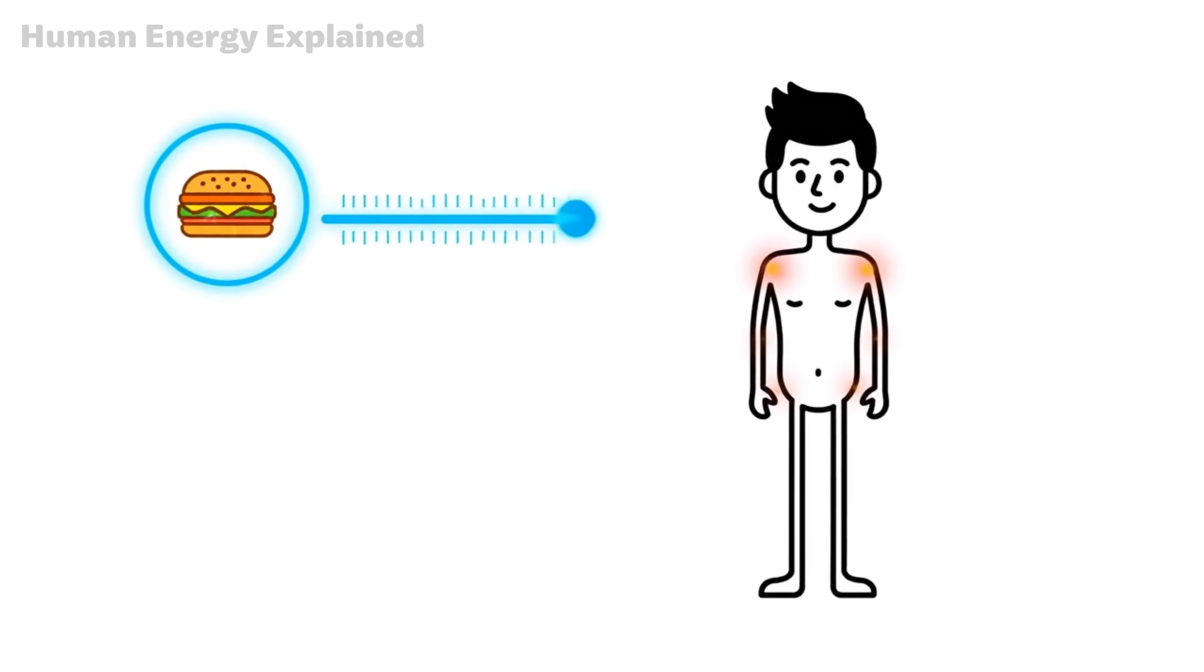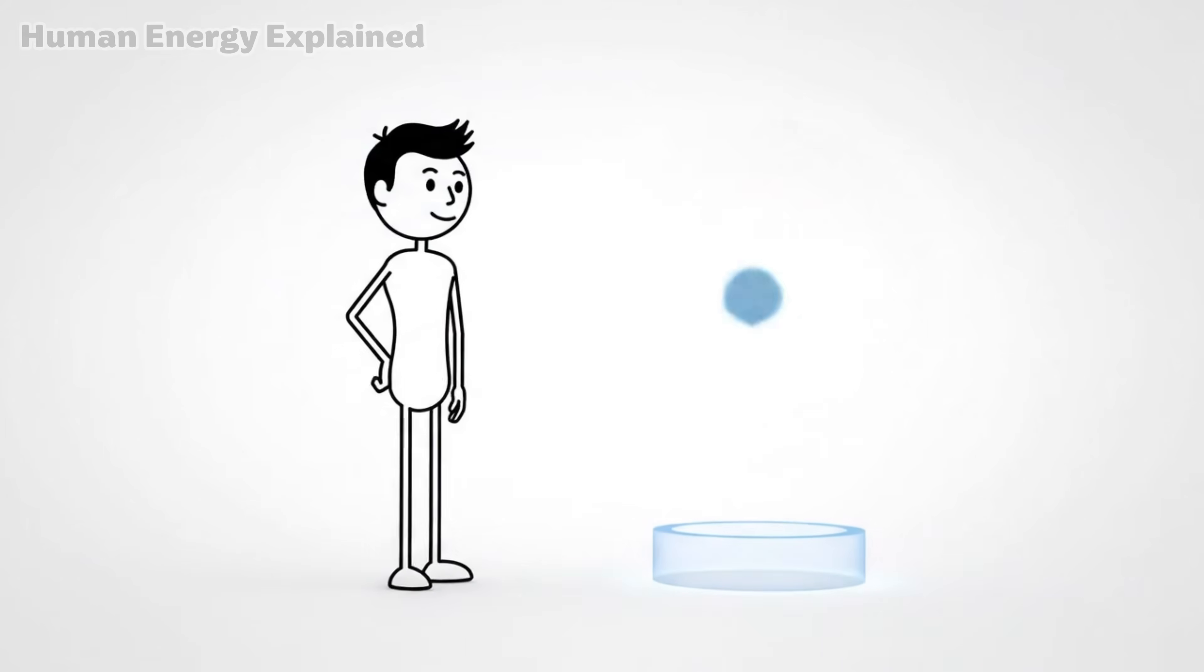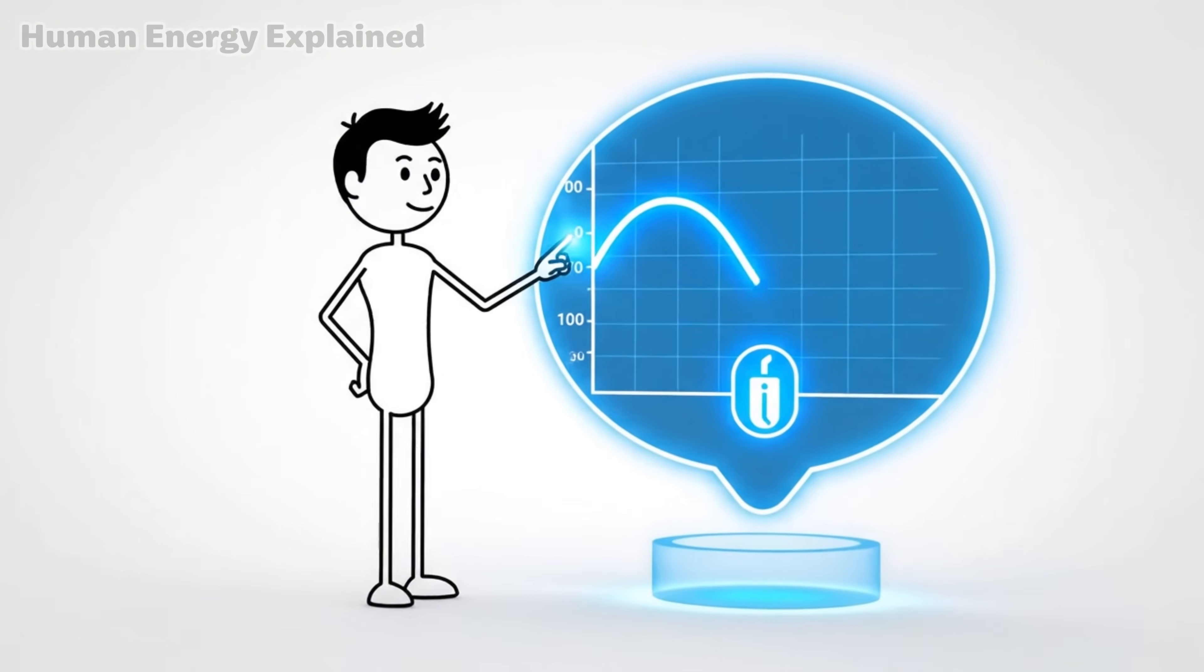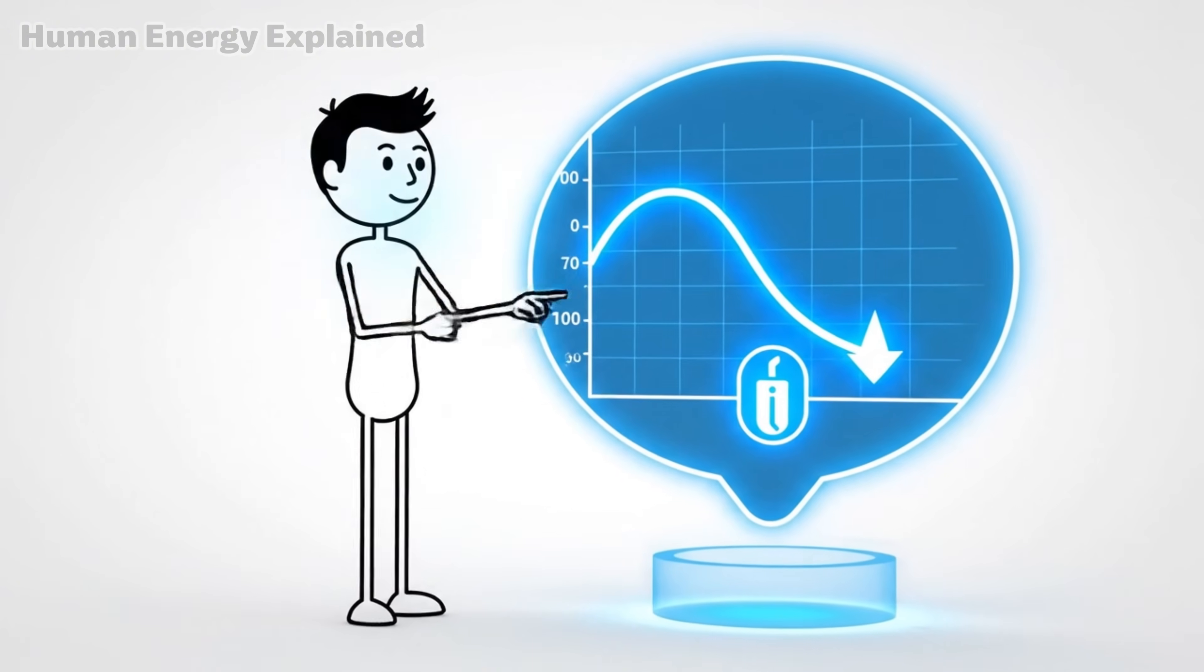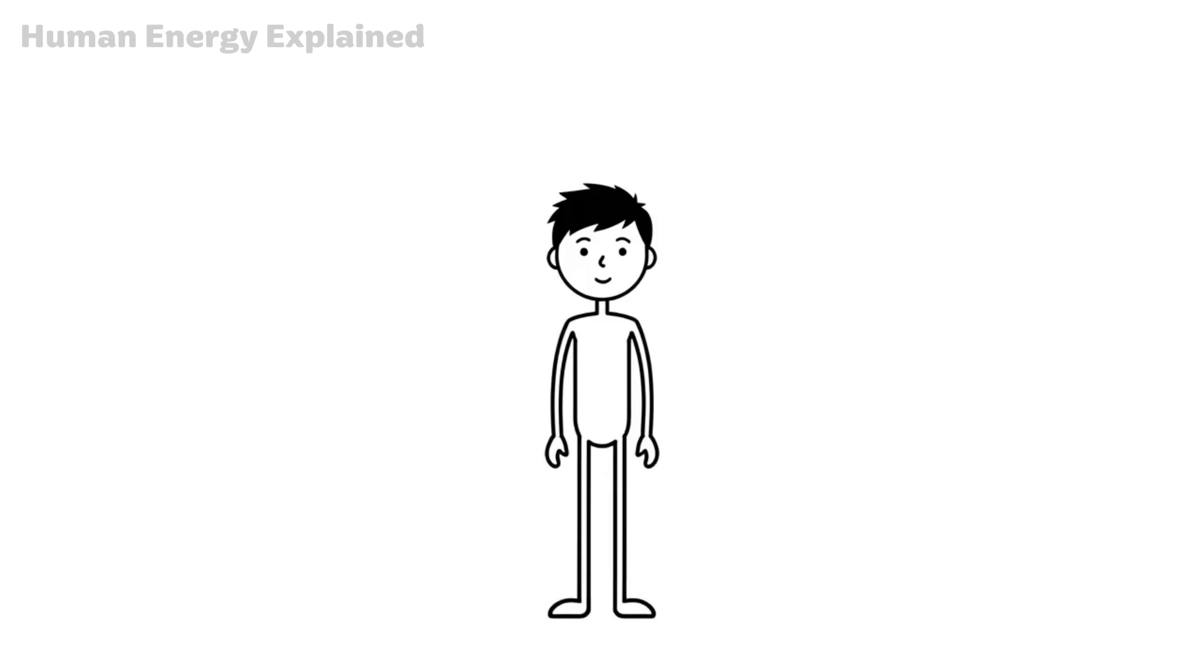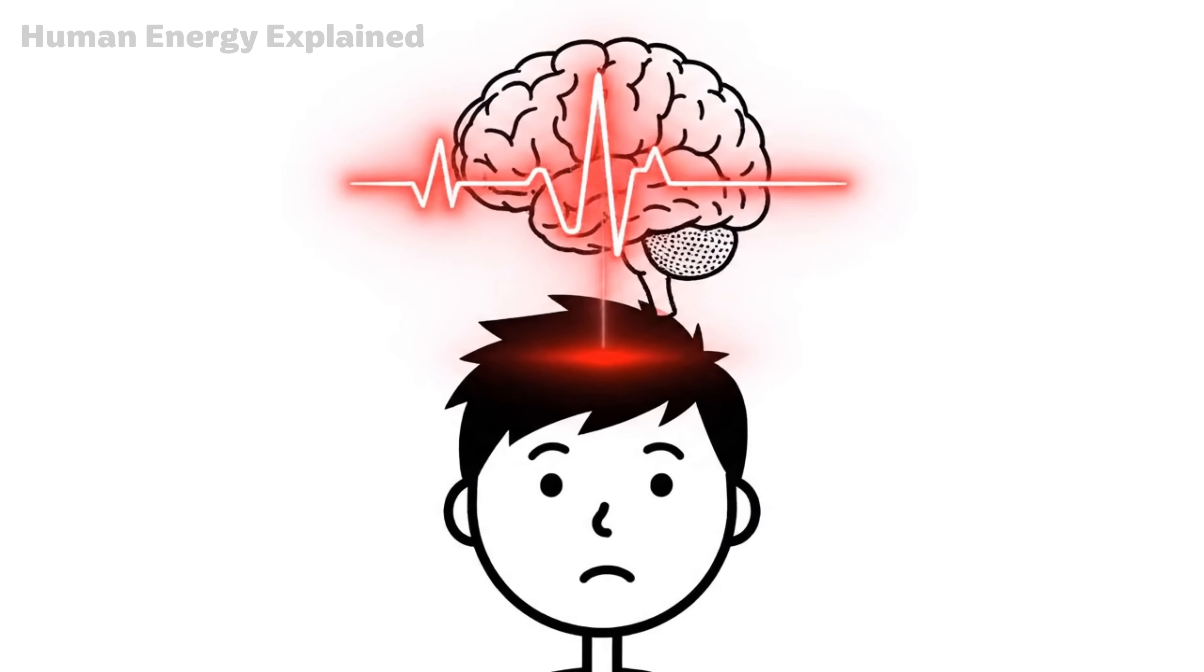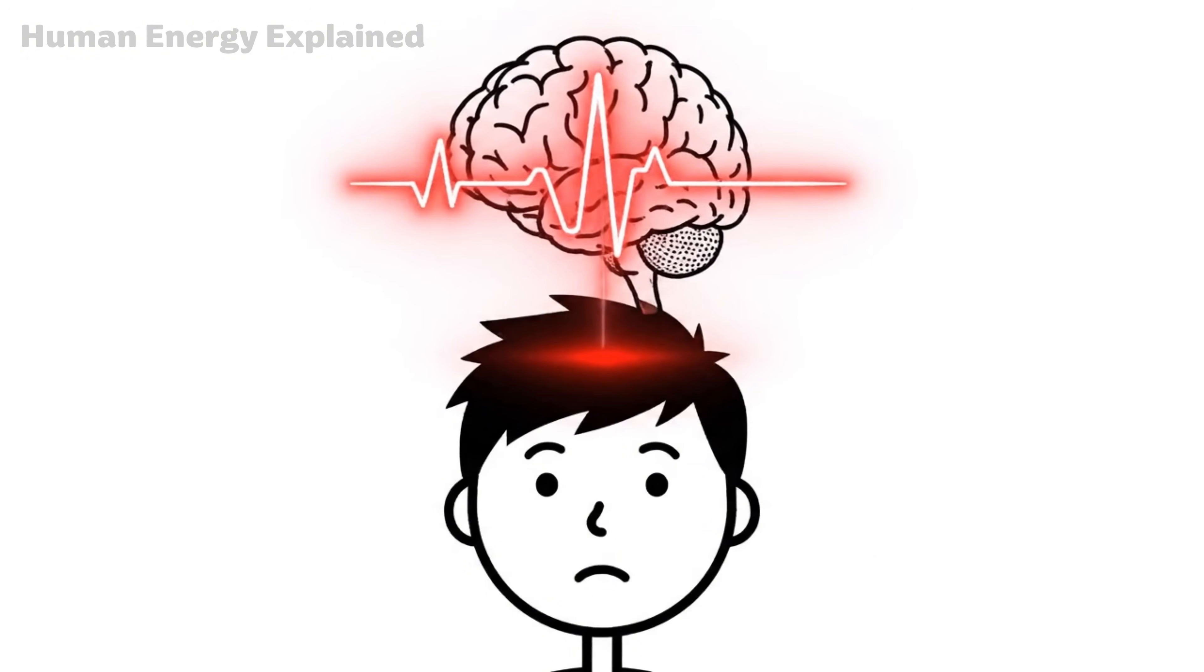It starts within the first few hours. You skip breakfast, or maybe you push back lunch, and your body notices almost immediately. Blood sugar begins to drop. Insulin, the hormone that controls how your cells absorb energy, starts to fall. And your brain, so accustomed to a steady stream of glucose, sends out its first distress signal.